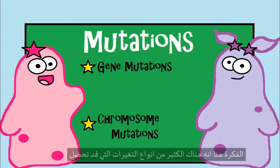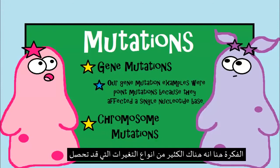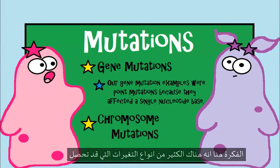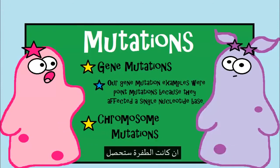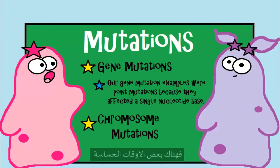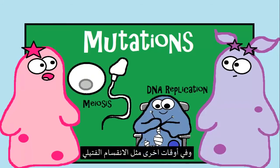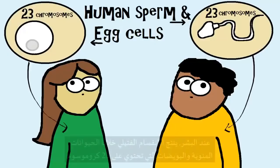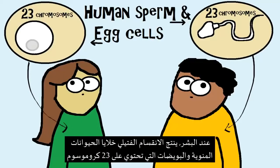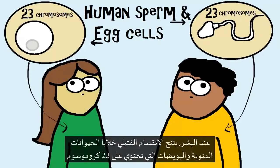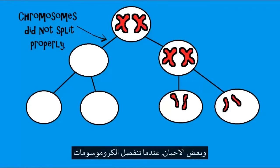There are more mutations than what we just covered, but the idea is that many kinds of changes can happen. There are also vulnerable times for mutations, like during DNA replication in interphase and during meiosis. Remember that in humans, meiosis produces sperm and egg cells that have 23 chromosomes.